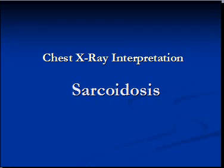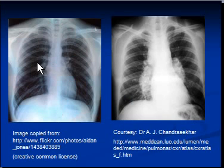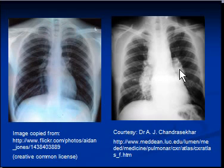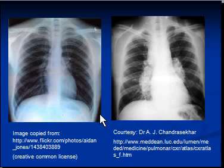We will continue to discuss sarcoidosis, especially the radiologic appearance on a chest X-ray. The chest X-ray on your left hand side is absolutely normal. The X-ray on your right hand side shows bilateral hilar masses, which is a classical representation of bilateral hilar lymphadenopathy. The X-ray also shows enlarged paratracheal lymph nodes.